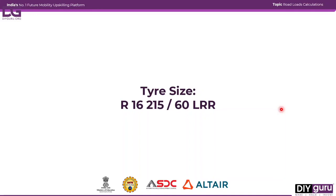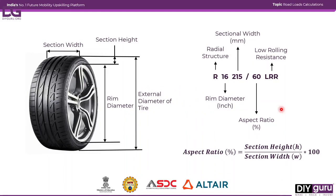To give a basic structure: the tire has a rim diameter and an external tire diameter. In order to get the tire radius, we need to find the external diameter or external radius of the tire.